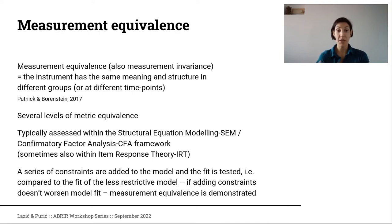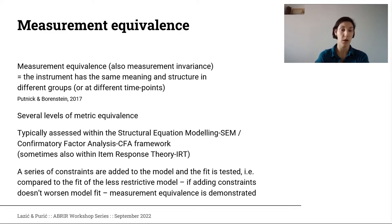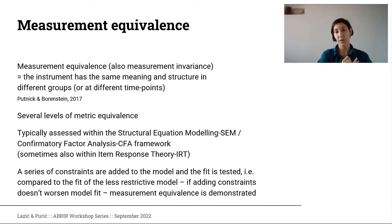If we have cross-cultural research using an instrument in different cultures and countries, then we will also want to demonstrate that it behaves in the same way in all of our samples. There are several levels of metric equivalence, which are typically tested through structural equation modeling, or more specifically the confirmatory factor analysis framework. We can also test for measurement invariance within item response theory, where we typically talk about differential item functioning, but we will now focus on the confirmatory factor analysis model.